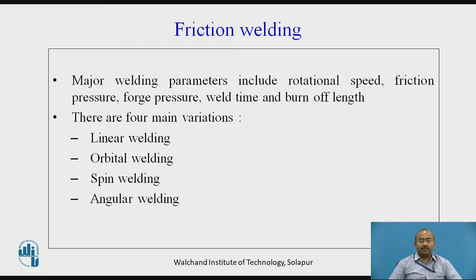The major welding parameters for friction welding include the rotational speed, friction pressure, forge pressure, weld time, and burn-off length — these are the major parameters required to be controlled. The four main variations are linear welding, orbital welding, spin welding, and angular welding. Depending on the particular nature of the weld joint, either of these variations can be used.